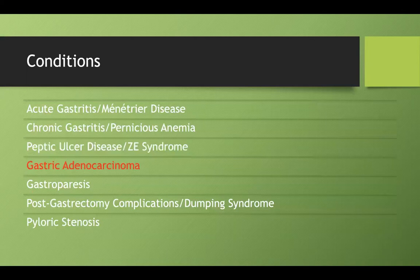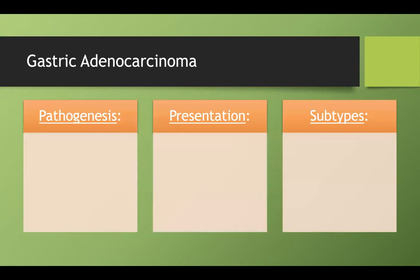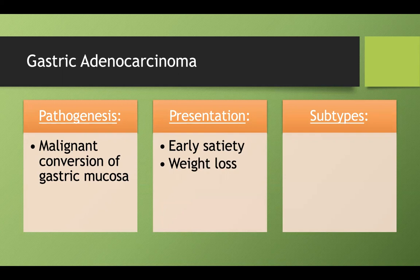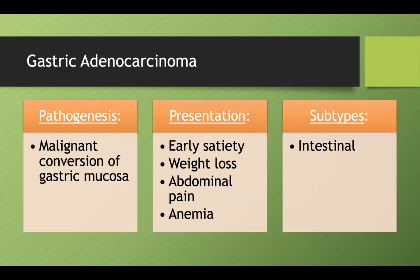Let's move on to gastric adenocarcinoma. This is a malignant conversion of gastric mucosa. It's going to present with early satiety — you're not going to be as hungry if you have a tumor occupying a lot of the lumen of your stomach. You can get weight loss, as you can with any cancer, abdominal pain, and anemia because the cancer can bleed, causing iron deficiency anemia.